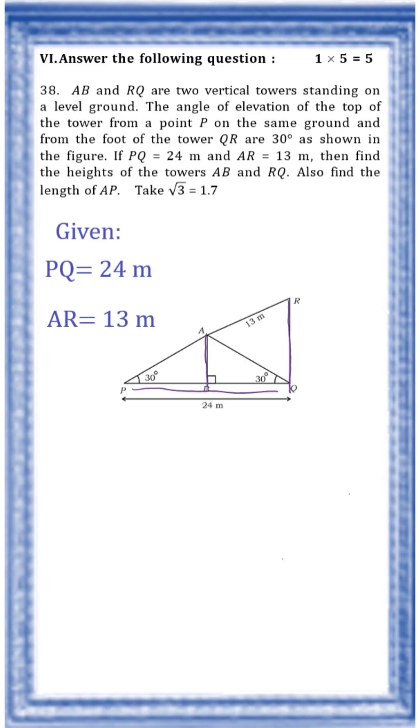And AR is 13 meter. The angle of elevation of the first tower from point P is 30 degrees, and from the point Q is also 30 degrees to the tower AP.